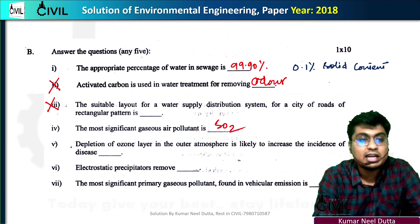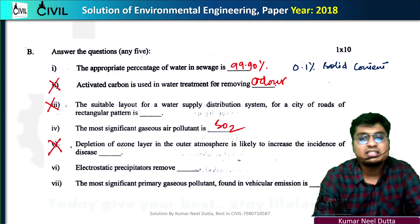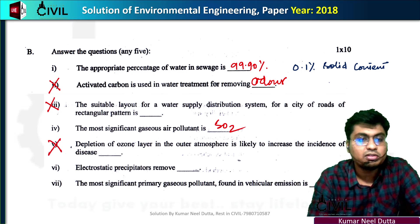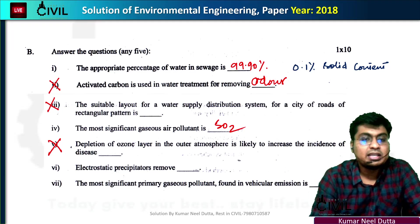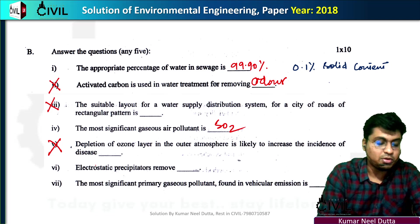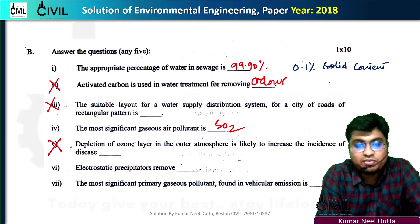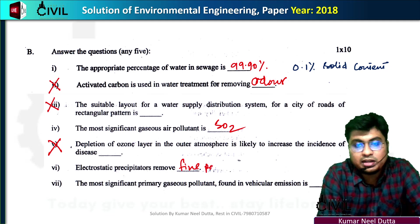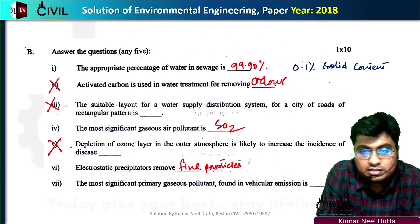Number 5: depletion of the ozone layer causes skin cancer. Number 6: an electrostatic precipitator is used to remove fine particles from the flowing gas.